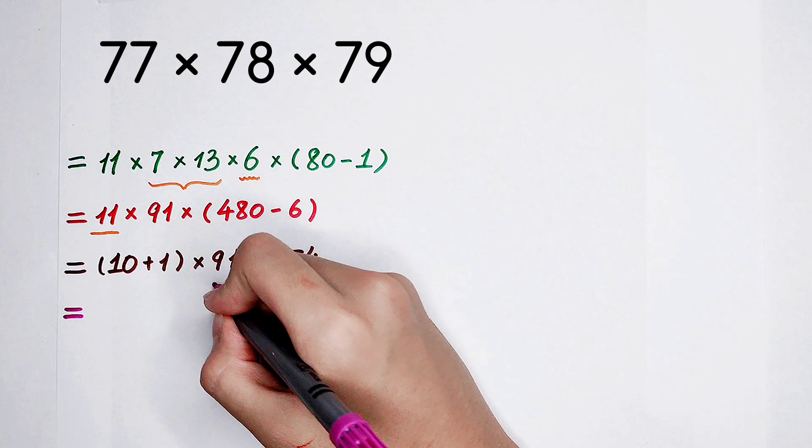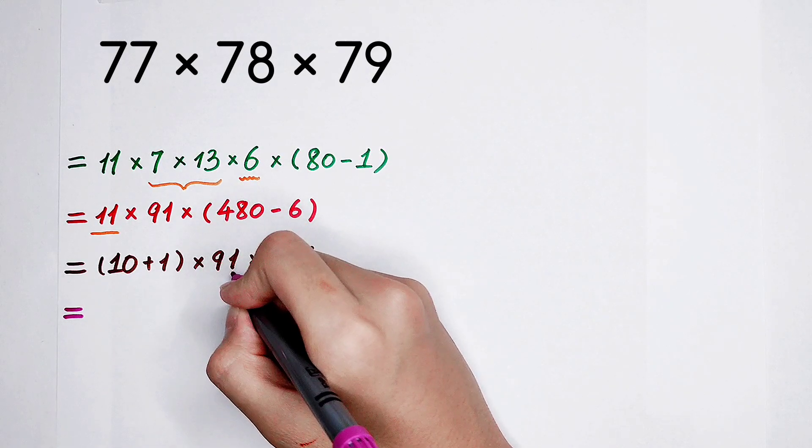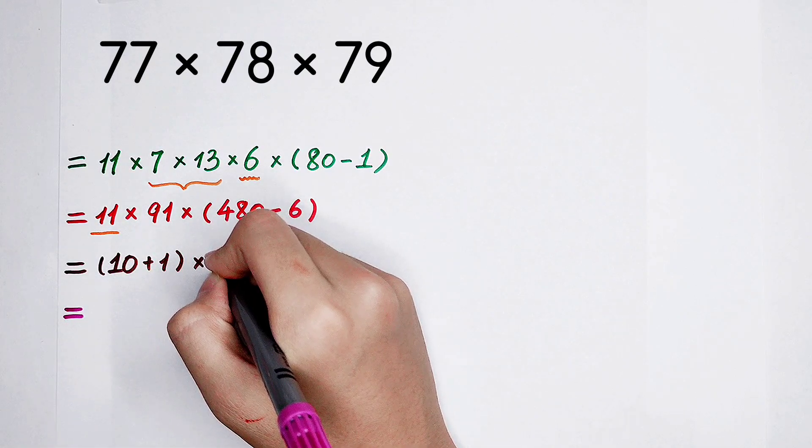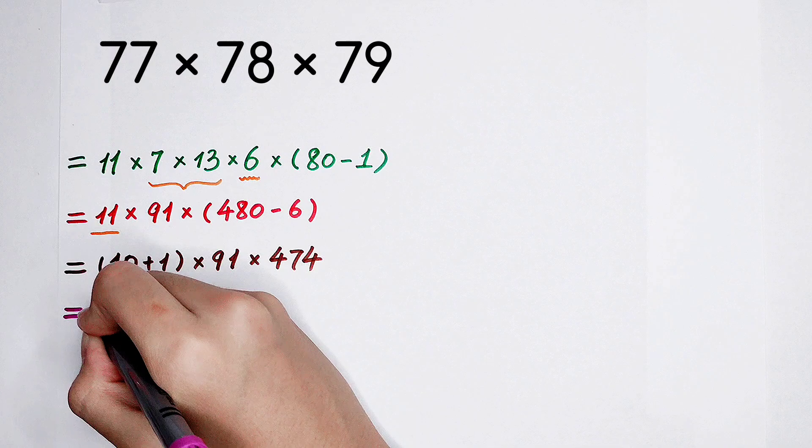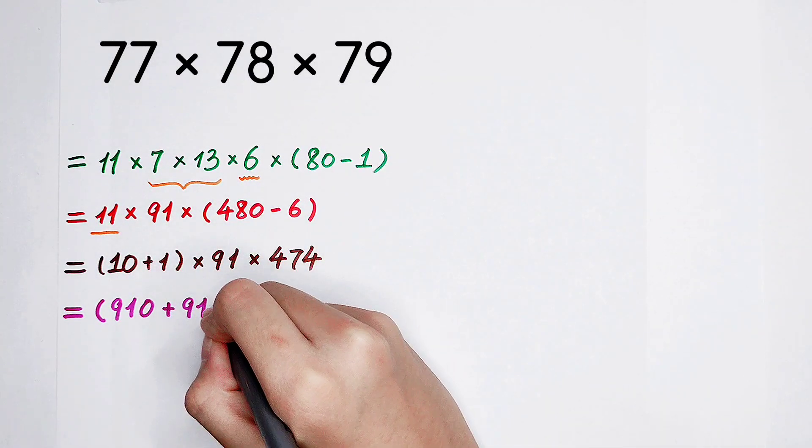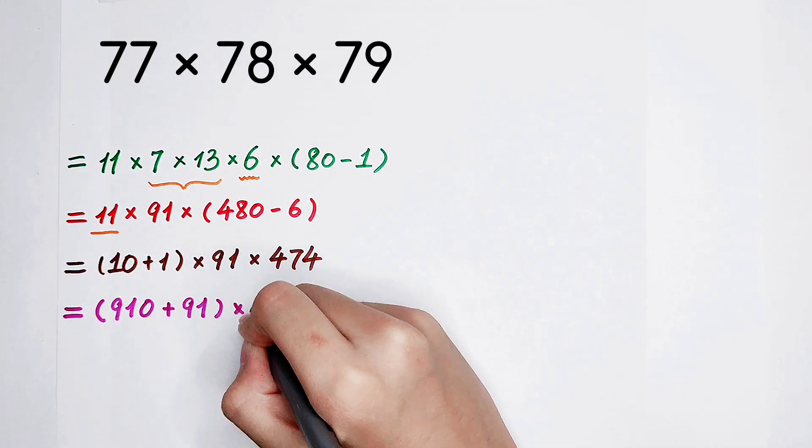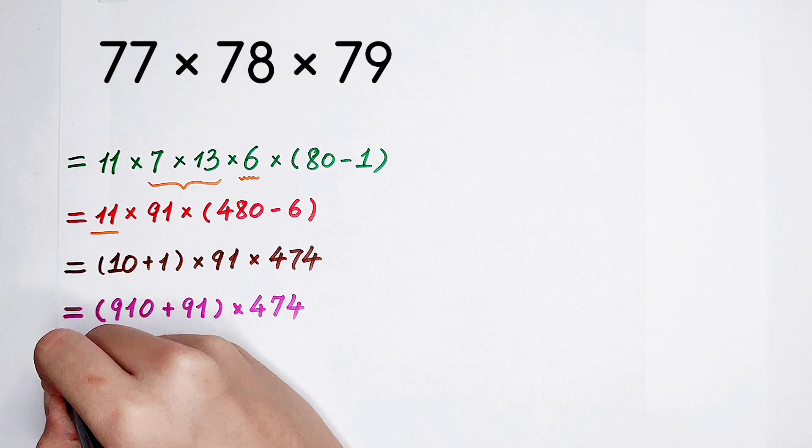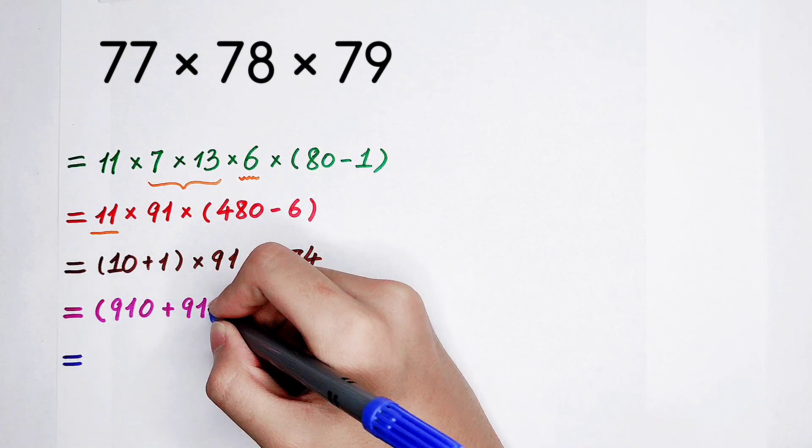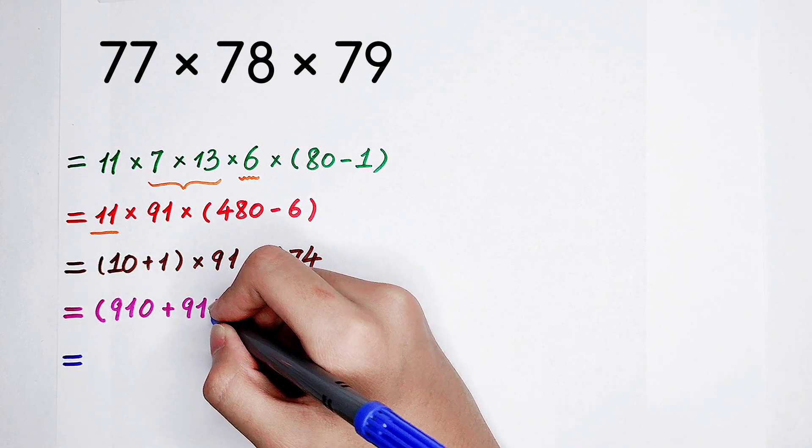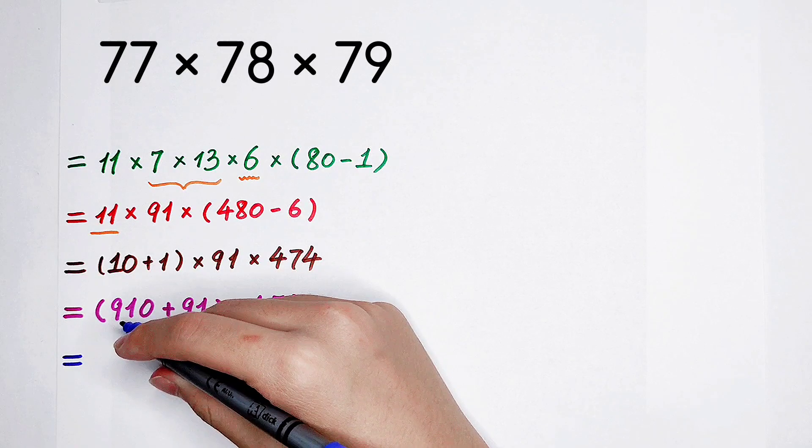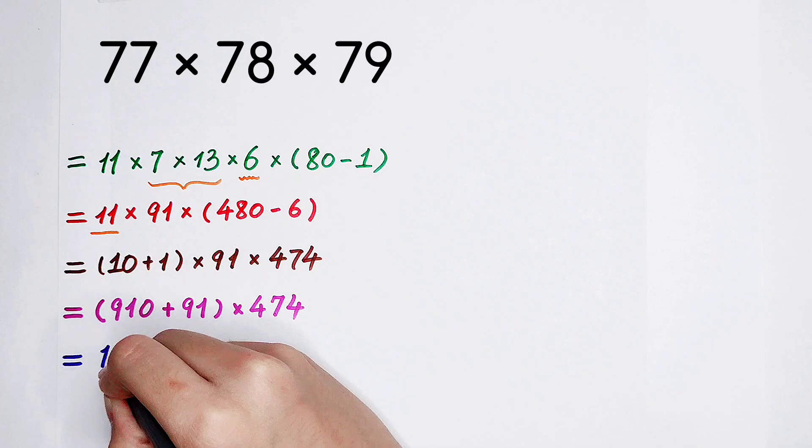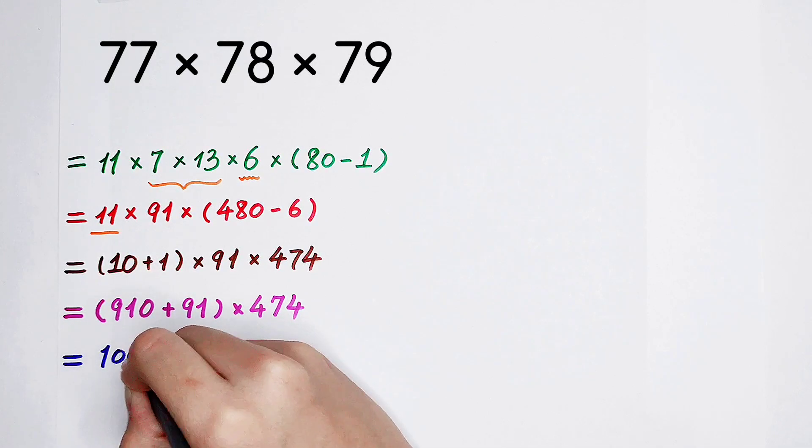Okay, I'm going to, I would like to put this 91 into the bracket. Let it jump into the bracket. The bracket is still here. Don't forget. And then times 474. Now our work is to calculate this number which is in the bracket. 910 plus 91, it is 1001.